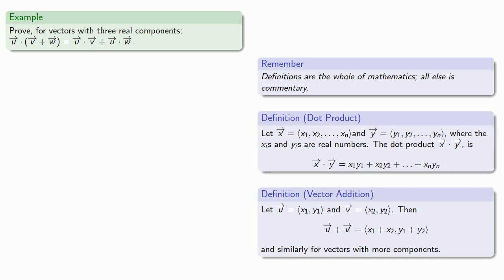And remember, we can always write down one side of an equality. So, let our vectors U, V, and W be vectors with three real components. And U·(V+W) is...